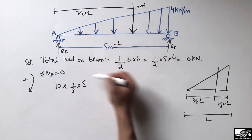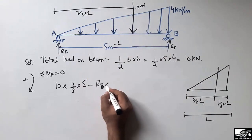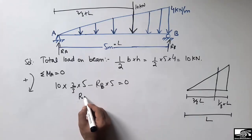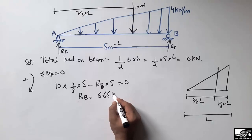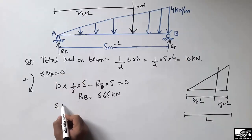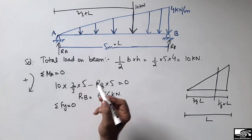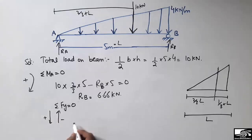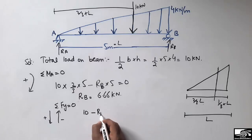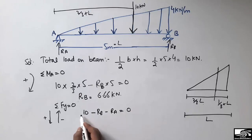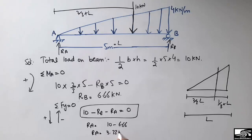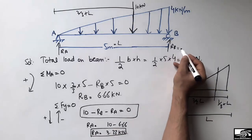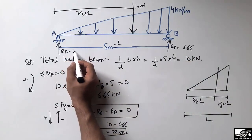Solving the moment equation gives RB × 5 = 10 × (2/3 × 5), so RB = 6.66 kN. Then using summation of vertical forces equal to zero, with downward forces positive: 10 − RB − RA = 0, so RA = 10 − 6.66 = 3.33 kN. The two support reactions are RB = 6.66 kN and RA = 3.33 kN.